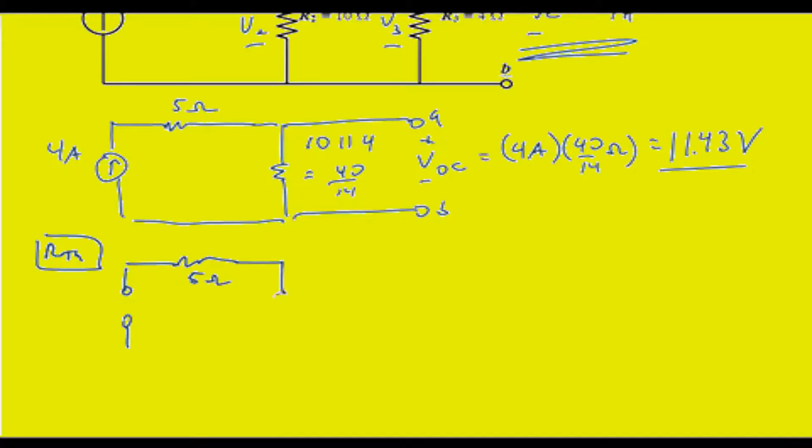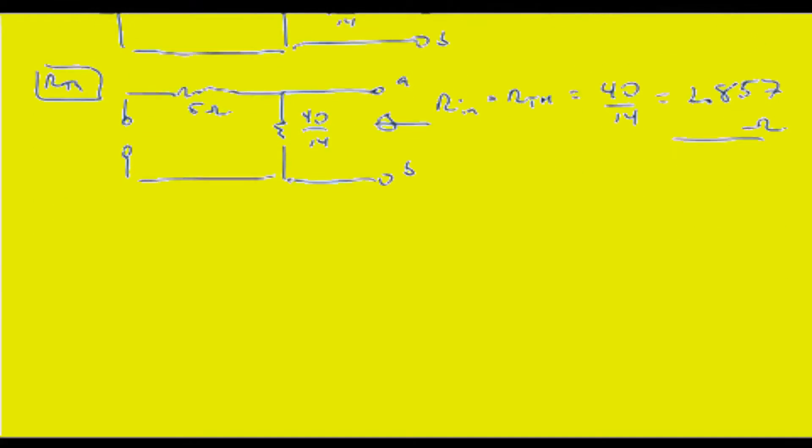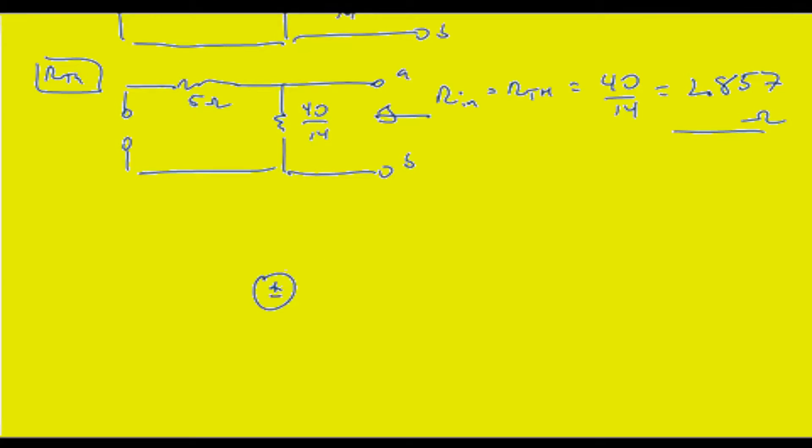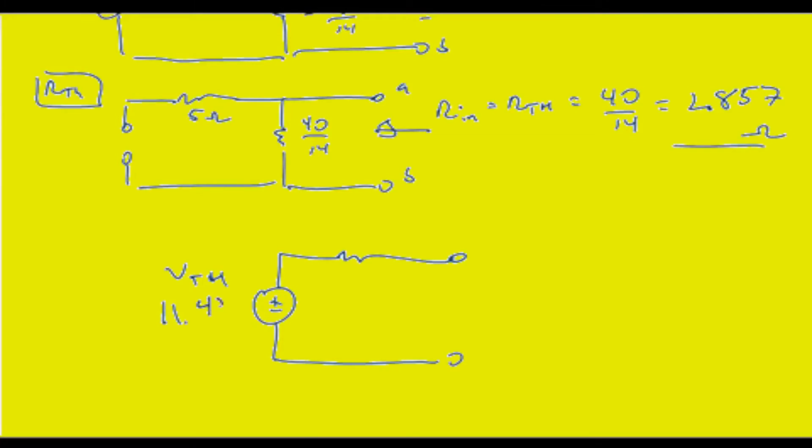So here's the 5, here's the 40/14ths, and the resistance seen looking into terminals A and B is R-Thevenin, and that is 40/14ths, or 2.857 ohms. So the final answer is V-Thevenin is 11.43 volts, and R-Thevenin is 2.86 ohms.